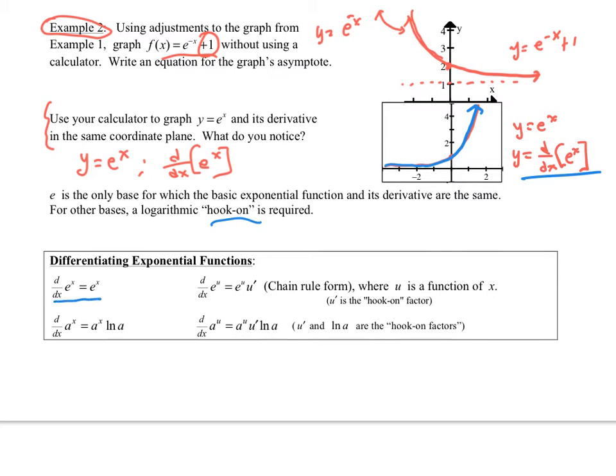Now, the only problem is if the exponent is something different than x, then you have to do the chain rule and then do the hook on. Our rules here are: derivative of e^x equals e^x. If we have a base that's different than e, we can write this as e^(ln a)^x.